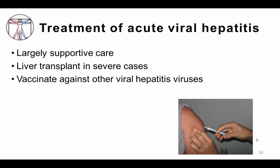The treatment of acute viral hepatitis is usually supportive care, which may involve an intensive care unit stay and even liver transplantation for very severe cases. If and when patients recover, it is important to vaccinate them against the other causes of viral hepatitis to help prevent a second hit in the future. Currently, we only have vaccines against hepatitis A and B. There are some medications that can be used against the hepatitis viruses, but we will discuss these in greater detail in future modules.